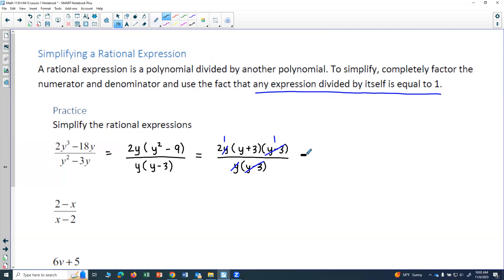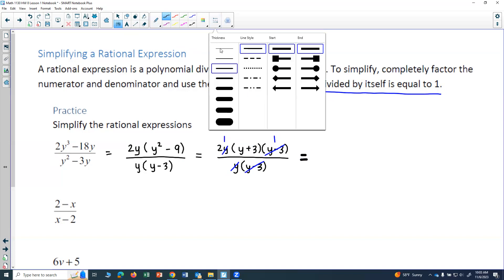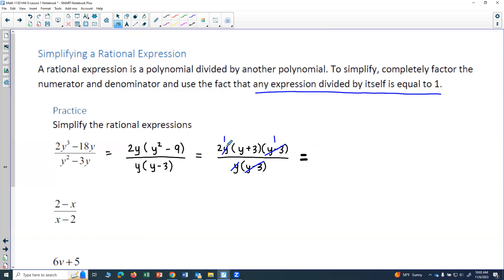And so I will end up with a 2 on the top and a y plus 3. So I'll have two parentheses y plus 3. Everything else canceled and gave us a 1. So 2 times y plus 3 will be my final answer. So that would be the simplified rational expression.